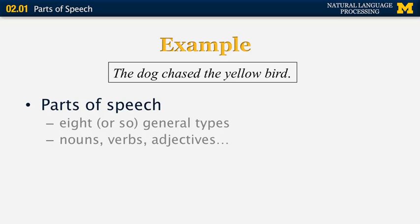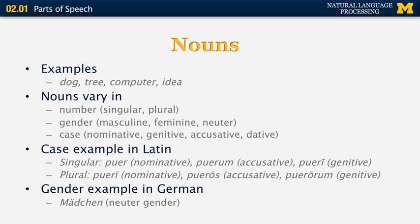Nouns include things like 'dog,' 'tree,' 'computer,' and 'idea.' They can be either concrete, like the first three examples, or abstract. Nouns can vary in number — singular and plural — and in gender and case, though gender and case variation is not found in English but does occur in other languages.